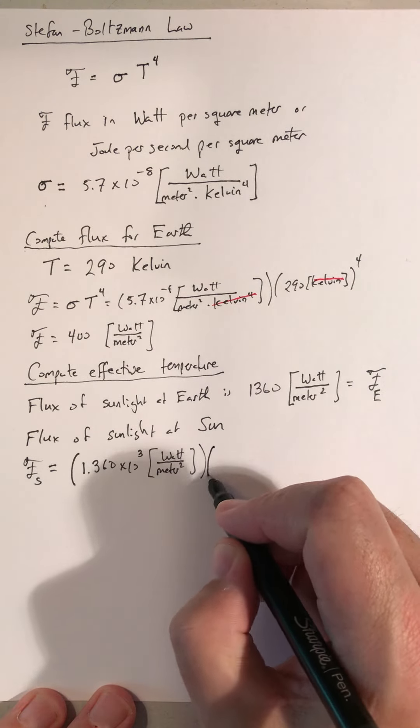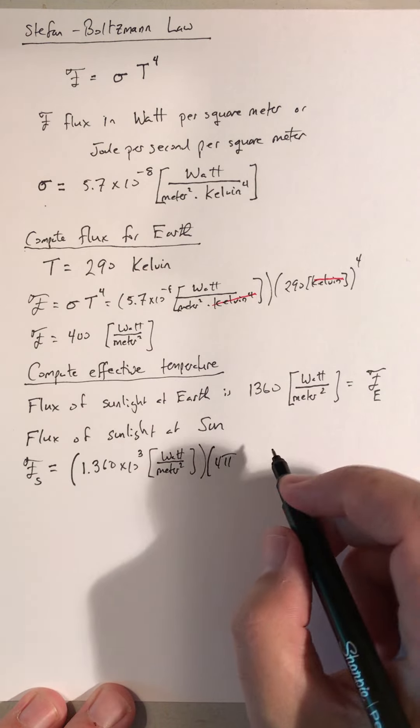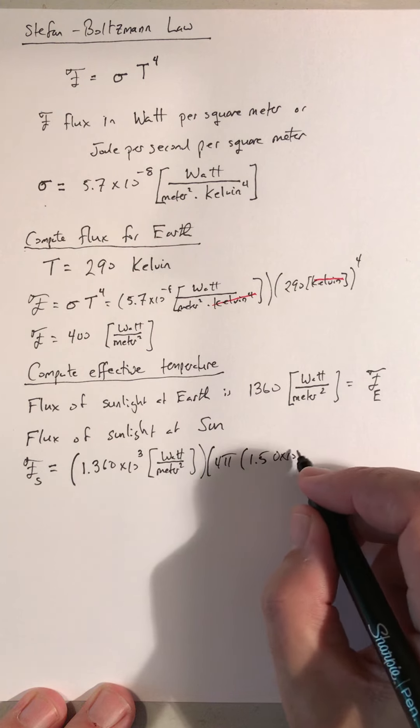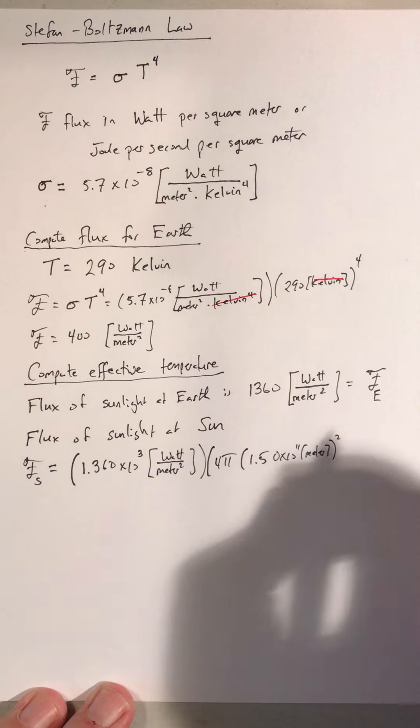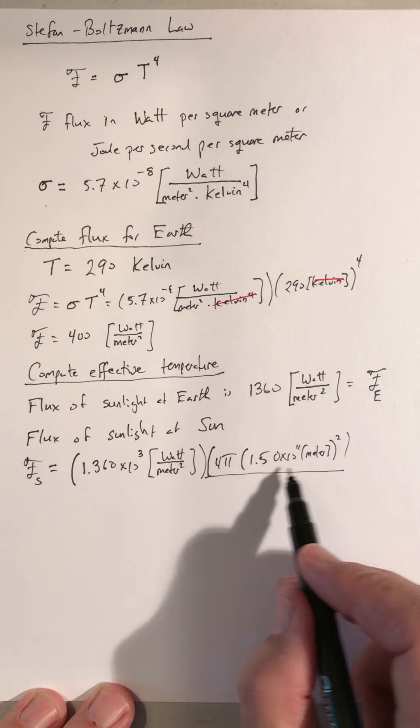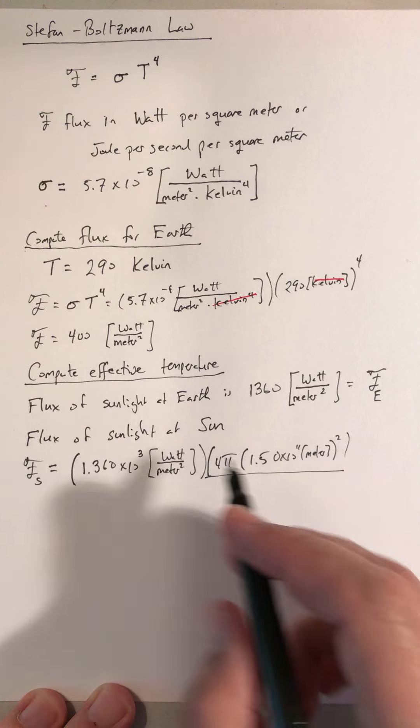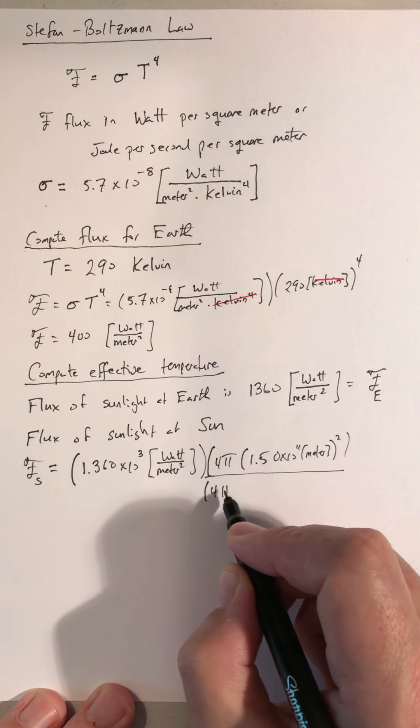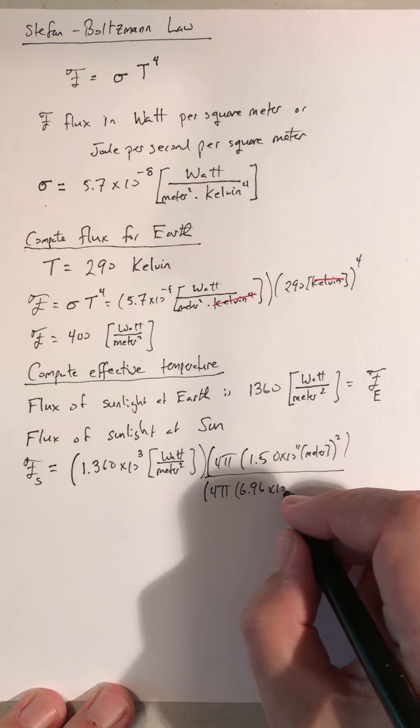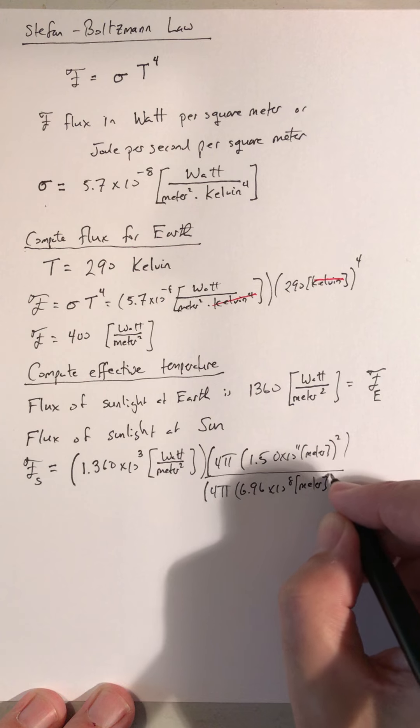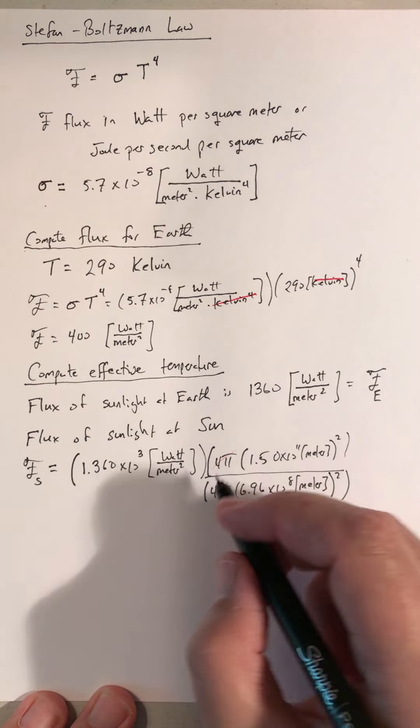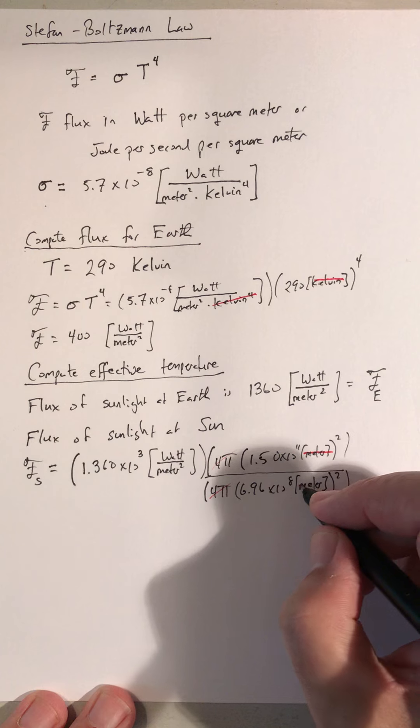So I'm going to have two factors here, a 4 pi, and then 1.50 times 10 to the 11th meters squared. So that's the area of a sphere whose radius is our distance away from the Sun. And then I need to divide by the surface area of a sphere that is the radius of the Sun. So 6.96 times 10 to the 8th meter squared. And 4 pi is obviously cancel, 4 pi. And then meter is going to cancel with meter.